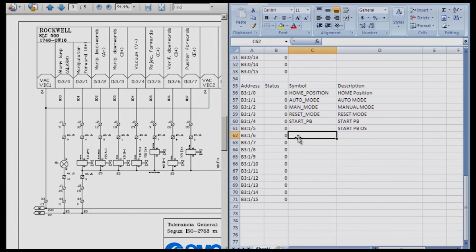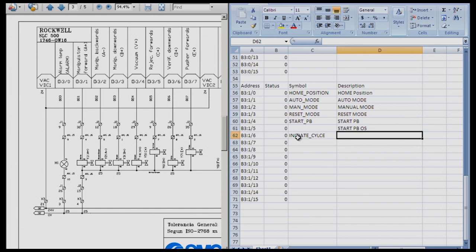We're going to need an initiate cycle. We're also going to need a part passed, and we're going to need a part failed. So I will go ahead and do initiate cycle, which is going to be B3 colon one six. And I'm going to put that in as a symbol of initiate cycle. And a description will be the same, initiate cycle, which will actually start the process off. When we continue on, you're also going to need a part's passed, a part's failed, and you will probably have more work bits that you're going to want to put in here. But for now, that will handle all of our work bits.